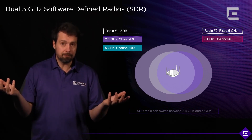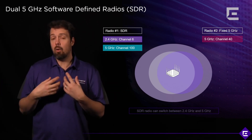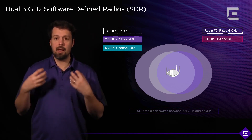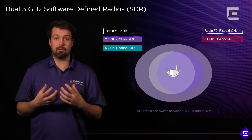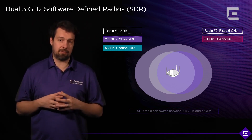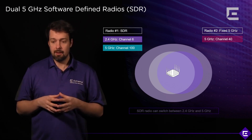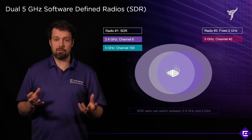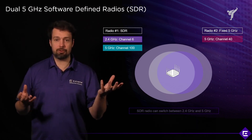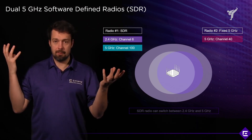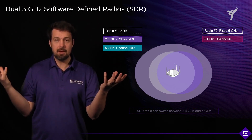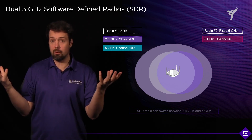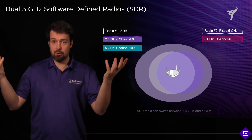It can either run 2.4 GHz, if that's something you need, or it can run 5 GHz, giving you the flexibility and capacity of 5 GHz spectrum. The AP will then serve two different basic service sets, both working on 5 GHz on two non-overlapping 5 GHz channels.